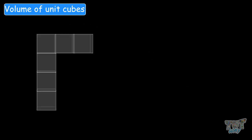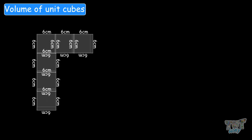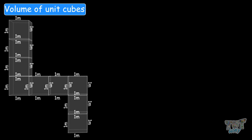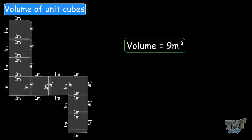What will be the volume of this figure? It has 6 cubes, each with a side of 6 centimeters, so the volume is 6 centimeters cubed. What is the volume of this figure? It has 9 cubes, each with a side of 1 meter. So this figure will have a volume of 9 meters cubed.